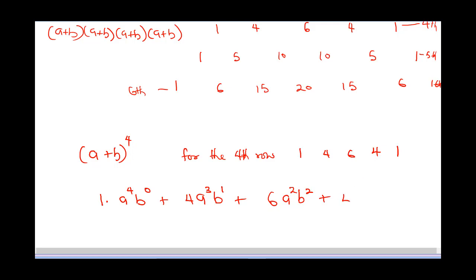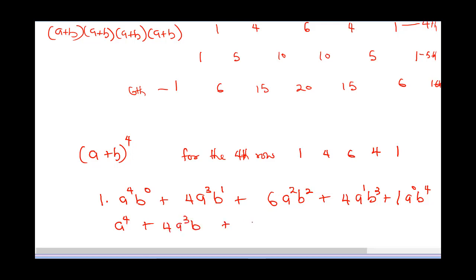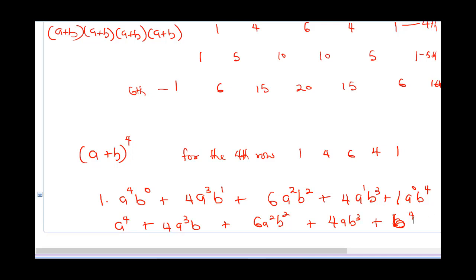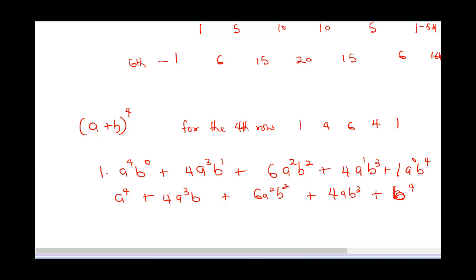Then coefficient 4 gives a to the power 1, b cubed. The last term is 1 times a to the power 0, b raised to power 4. So a goes from 4, 3, 2, 1, 0 while b goes from 0, 1, 2, 3, 4. Simplifying: a⁴ + 4a³b + 6a²b² + 4ab³ + b⁴.